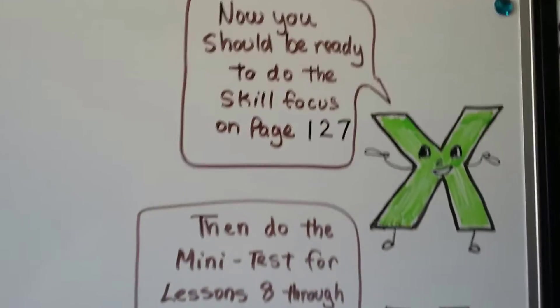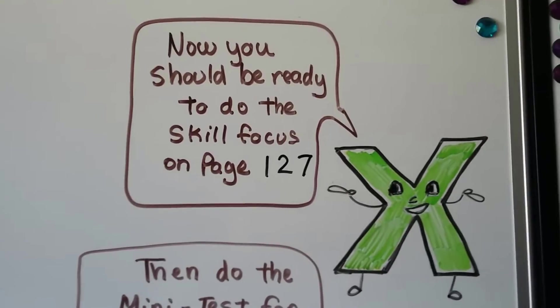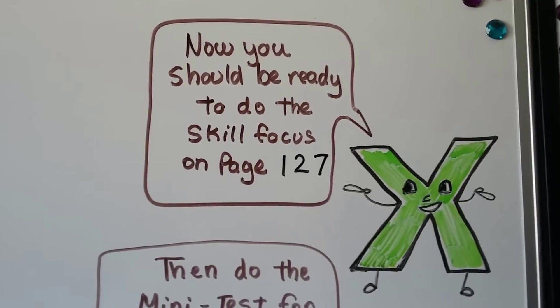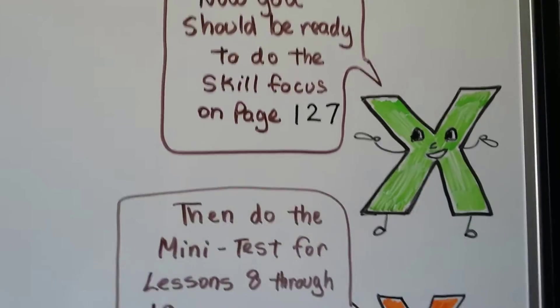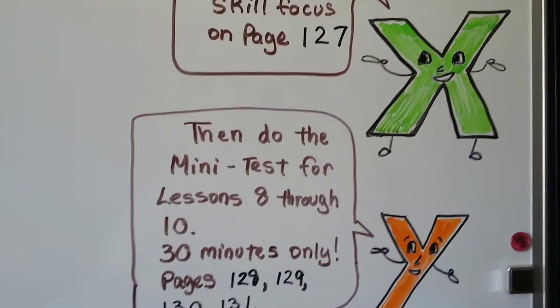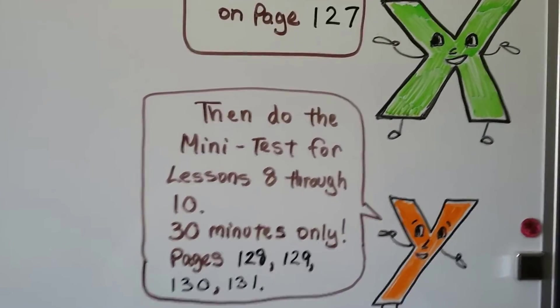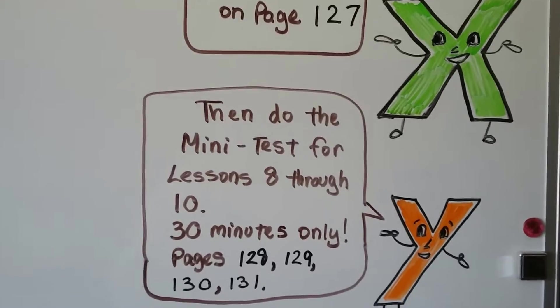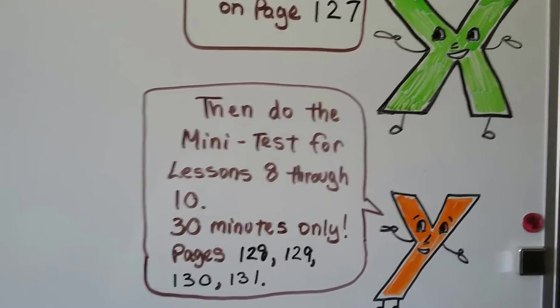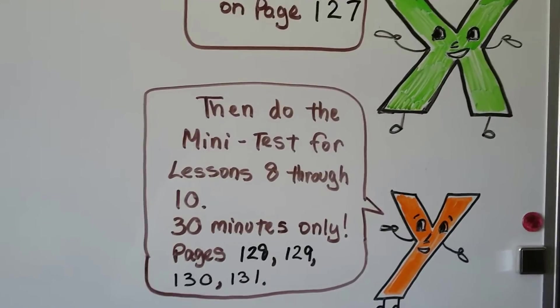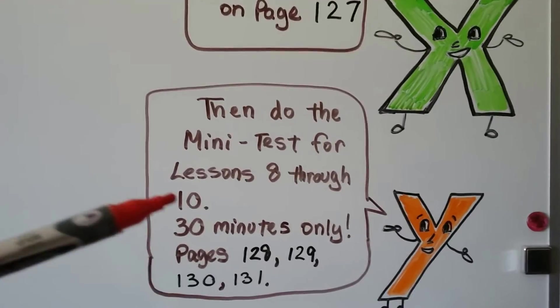So, now you should be ready to do the skill focus on page 127. If you do well on that, you can continue on and do the mini test for lessons 8 through 10. But, be careful. It says to try doing it in 30 minutes. Really try doing it in 30 minutes to see how you would do compared to the real GED test.